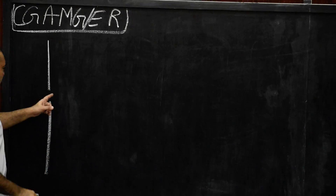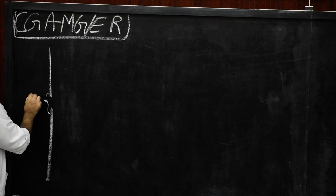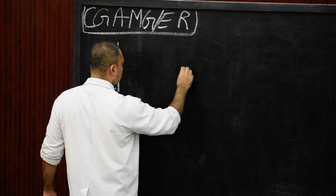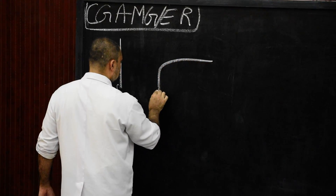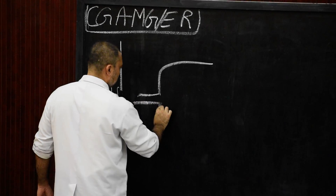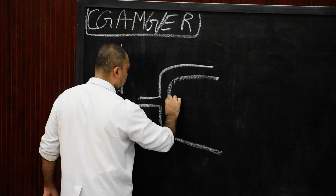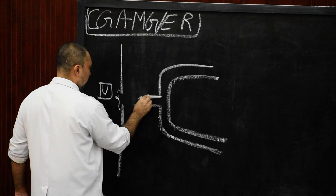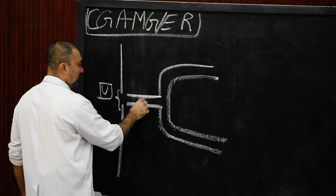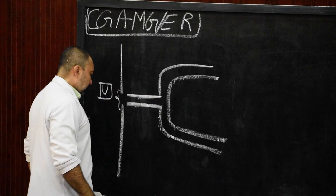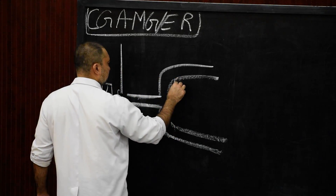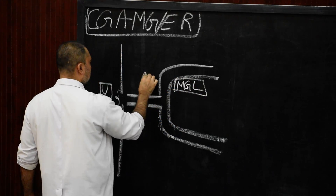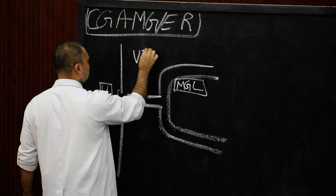This is the anterior abdominal wall and this portion over here will be the umbilicus. Inside, we are going to show the entire mid-gut loop. This portion here is the vitelo-intestinal duct connecting the mid-gut loop.